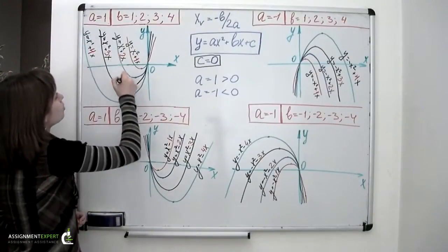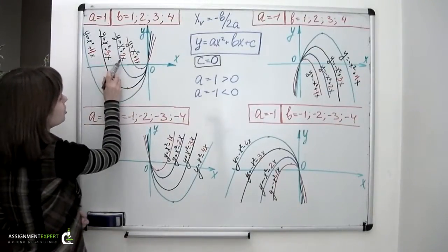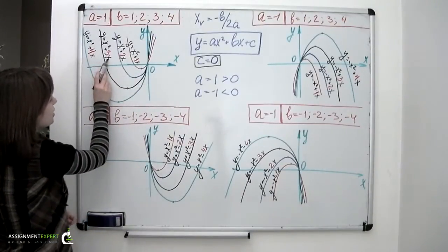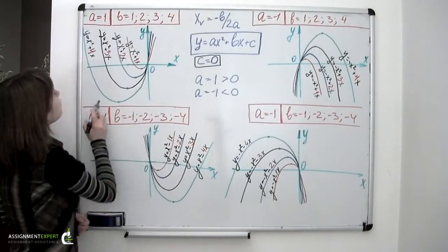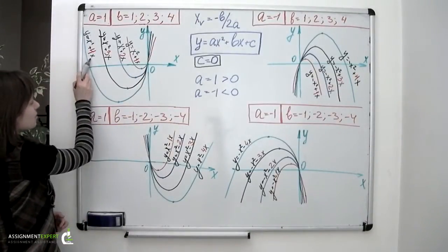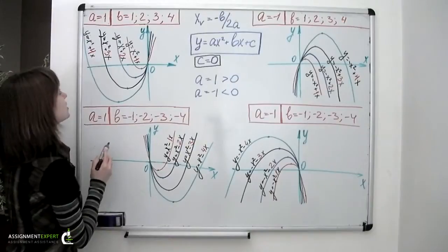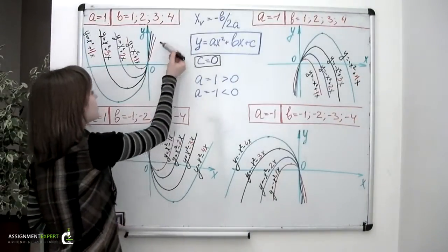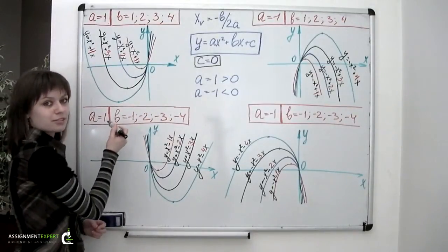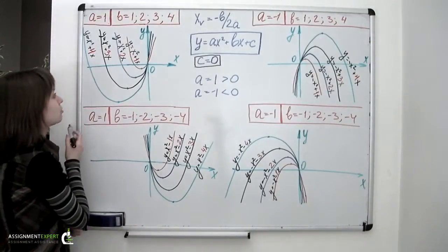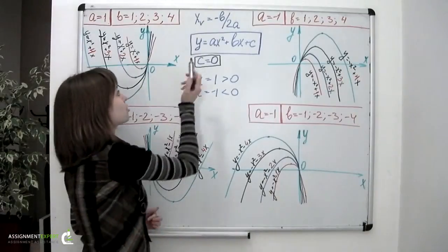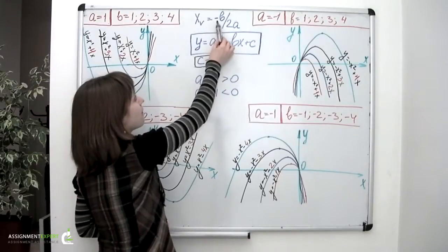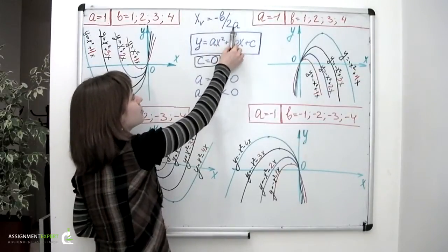Then there is this blue one, described by an equation x squared plus 2x. Then the black one, x squared plus 3x. And the widest one, the green one, x squared plus 4 times x. We can see that with a and b being positive numbers and b increasing, the vertex of the parabola moves downwards and to the left. We may also recall that the x coordinate of the vertex of the parabola is calculated by dividing negative b by 2a.